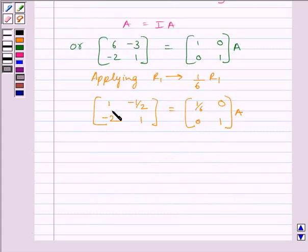Now, to make this element equal to 0, we will apply on R2 row operation R2 plus 2 R1. So, we can write, applying on R2 row operation R2 plus 2 R1.